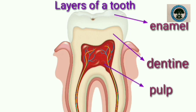And dentine. Dentine is just below the enamel. It is a bone-like material that is yellow in color. It helps to support the enamel.